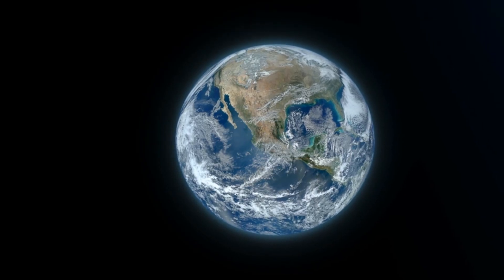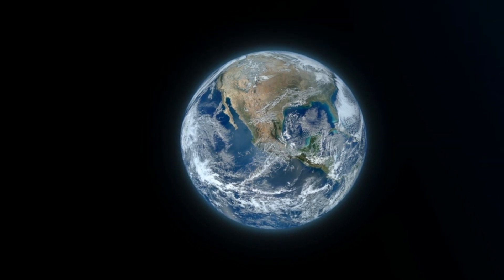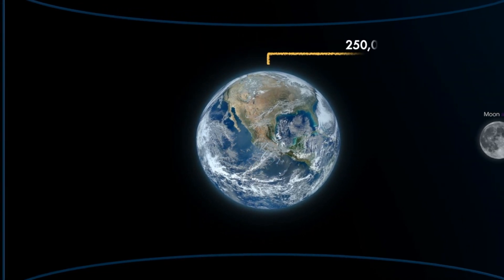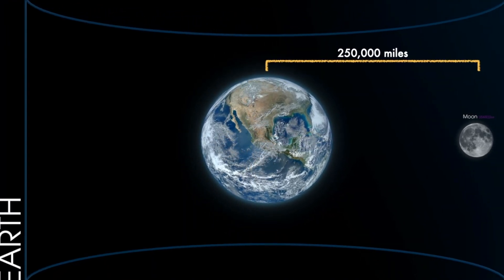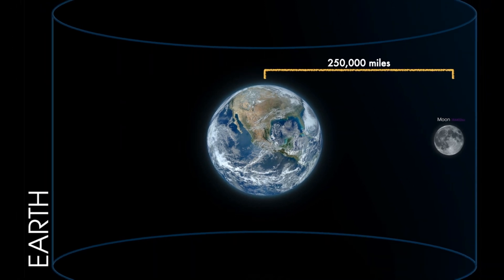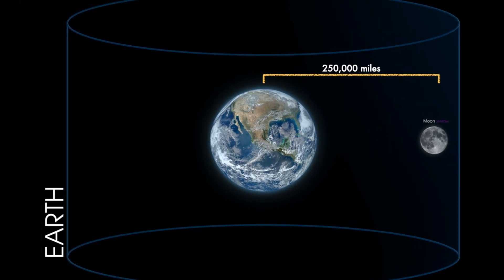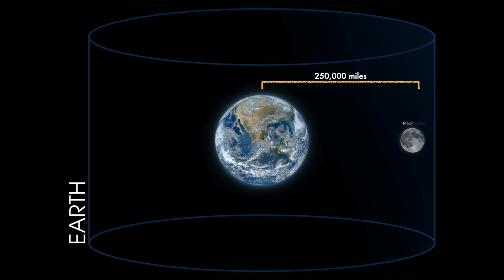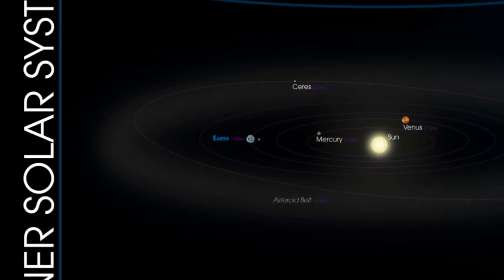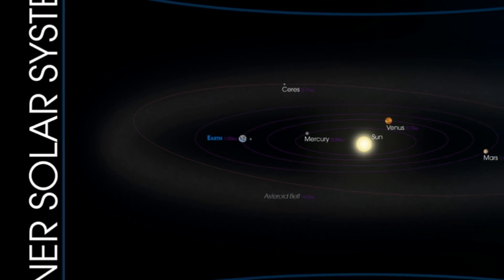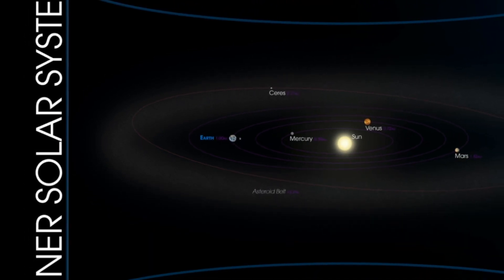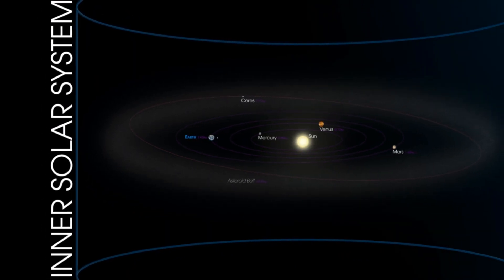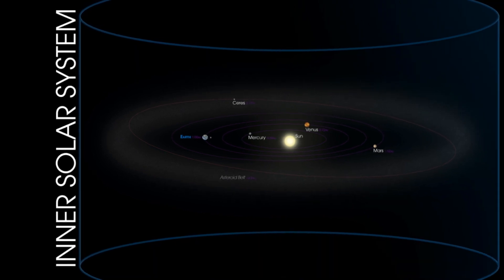We depart on our tour from Earth, our home planet. Every thought you've ever had, everyone you've ever met, and every step you've ever taken occurred right here. In fact, in the history of humanity, only 12 individuals have ever set foot on a cosmic body other than Earth. Even then, the trip to the moon was just a mere 250,000 miles — barely a sliver of all the space in the cosmos. Our Earth is just one of seven other planets gravitationally bound in orbit around our sun, along with asteroids, comets, and dwarf planets — all combined known as the solar system.